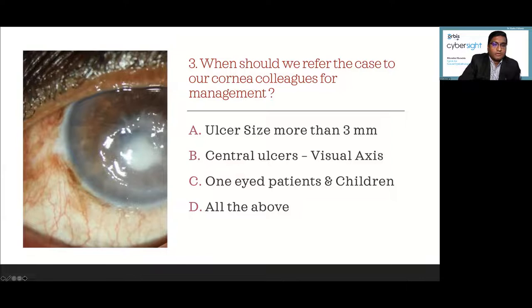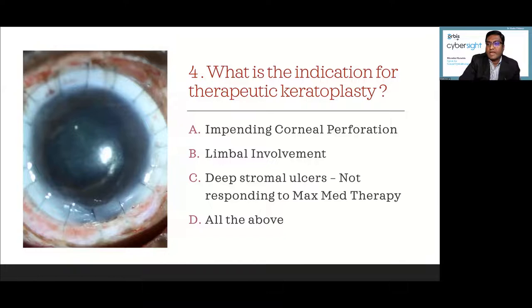Fourth question: What is the indication for therapeutic keratoplasty or surgical intervention in microbial keratitis? A, impending corneal perforation; B, limbal involvement; C, deep stromal ulcers not responding to maximal medical therapy; D, all of the above.